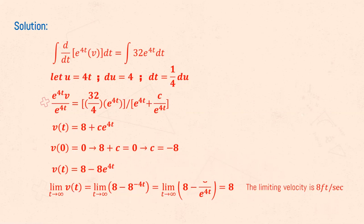By taking the limit of the velocity function as the time goes to infinity, we find that the limiting velocity is 8 feet per second. That is the fastest the object will fall until it hits the ground due to air resistance.